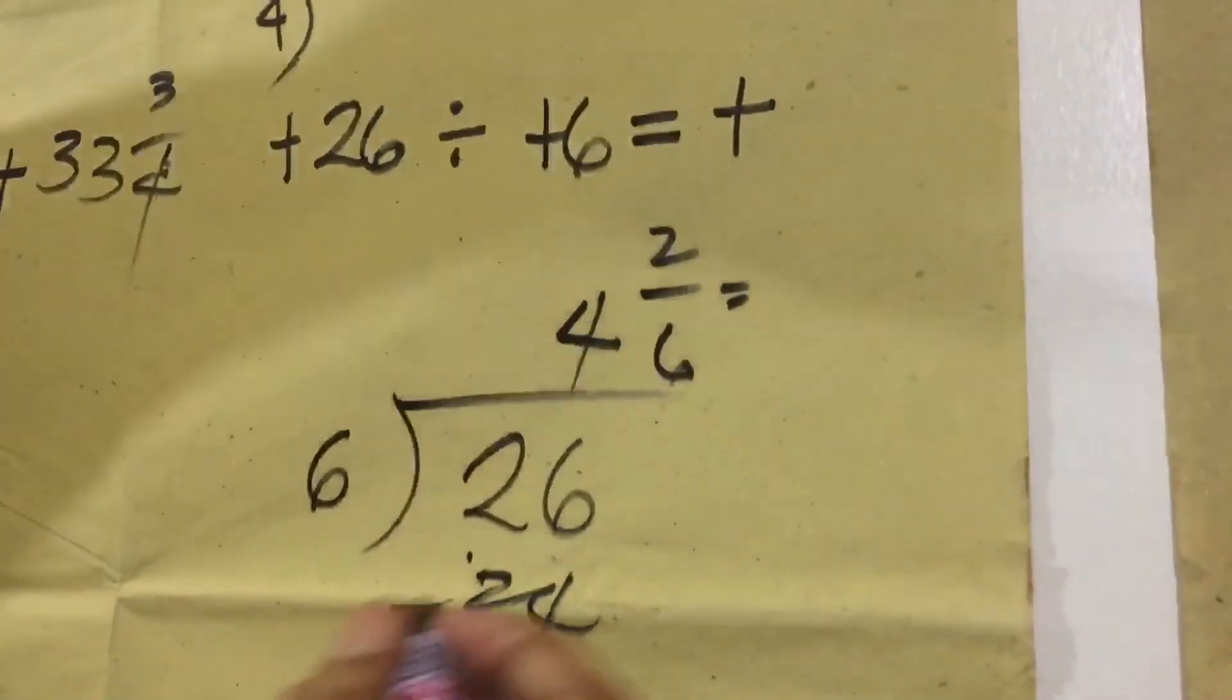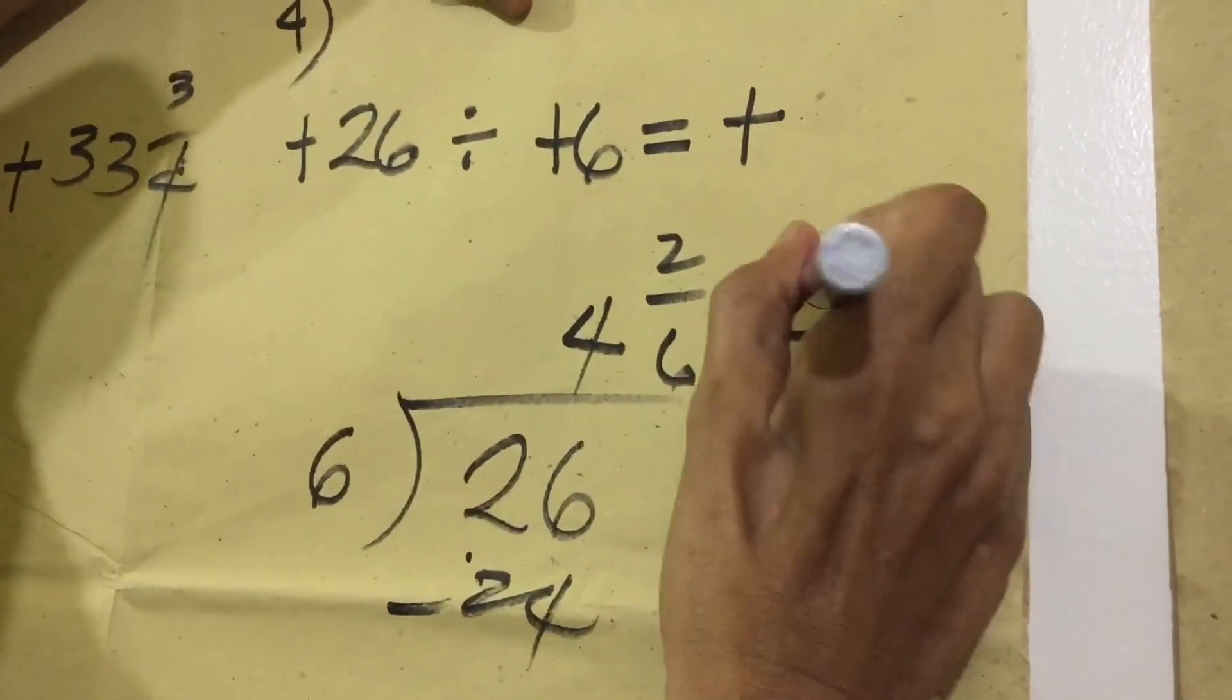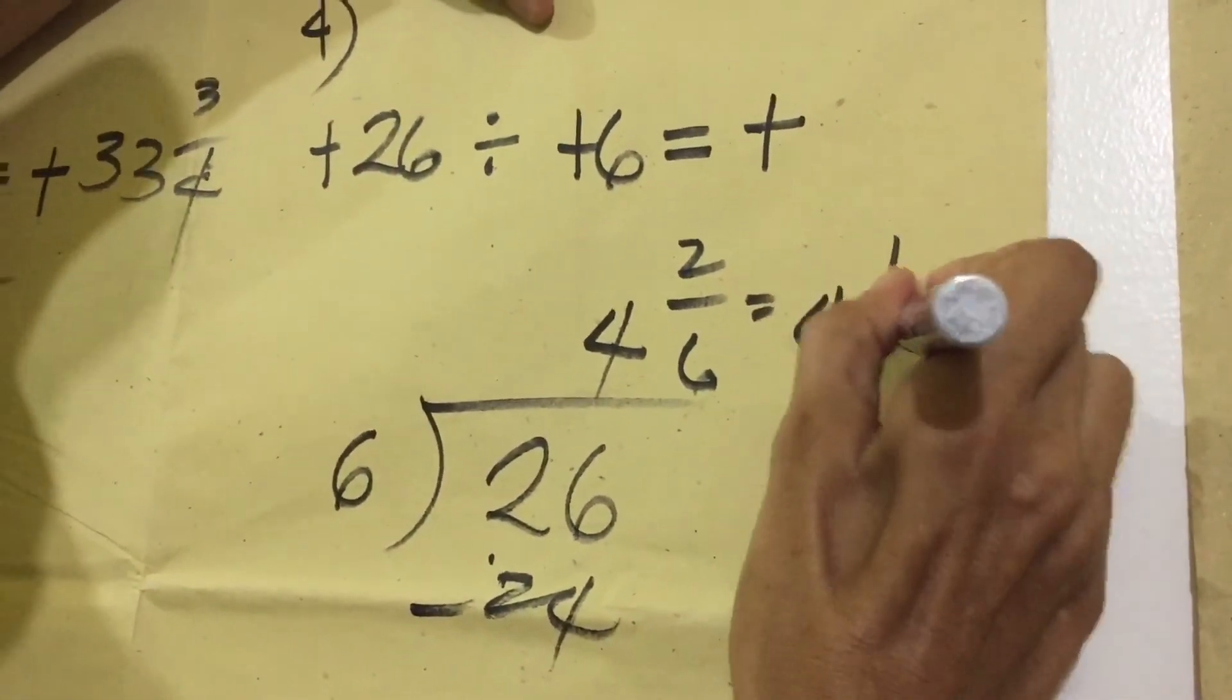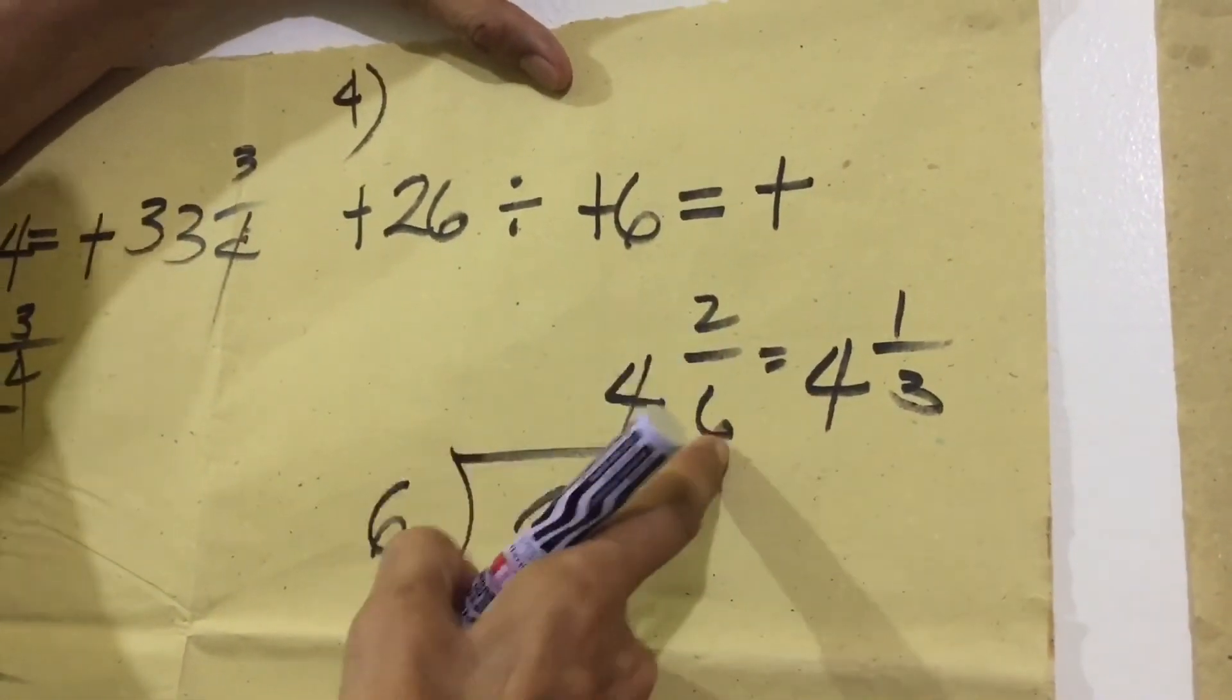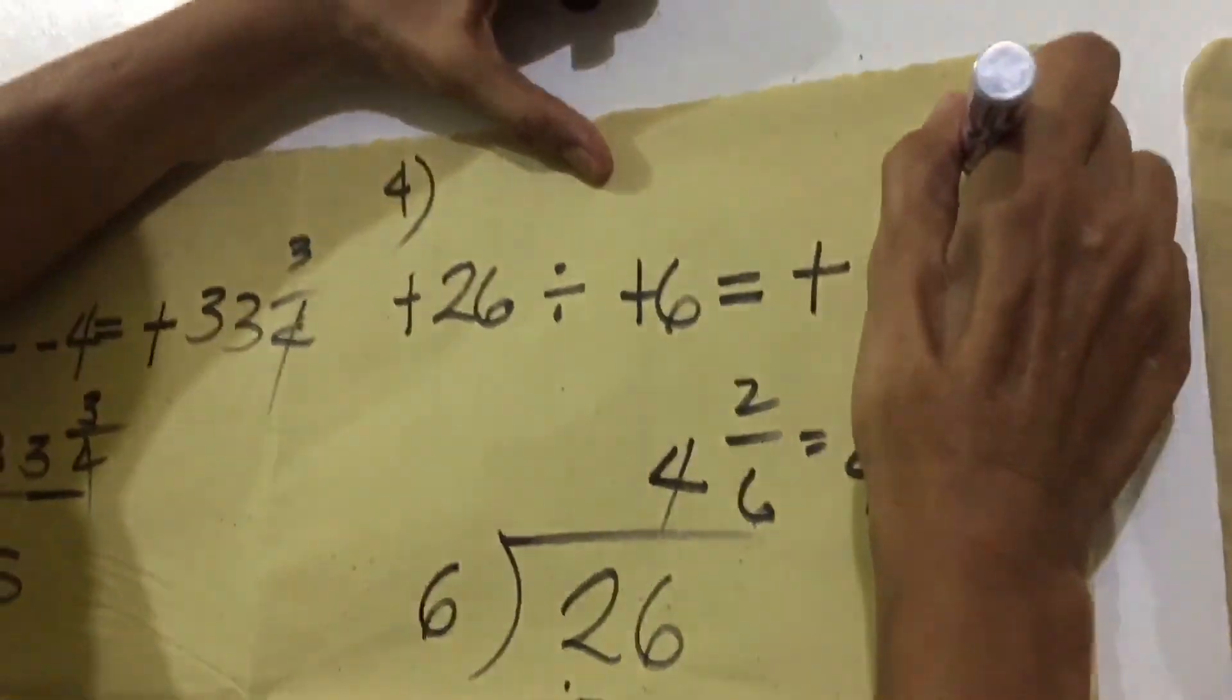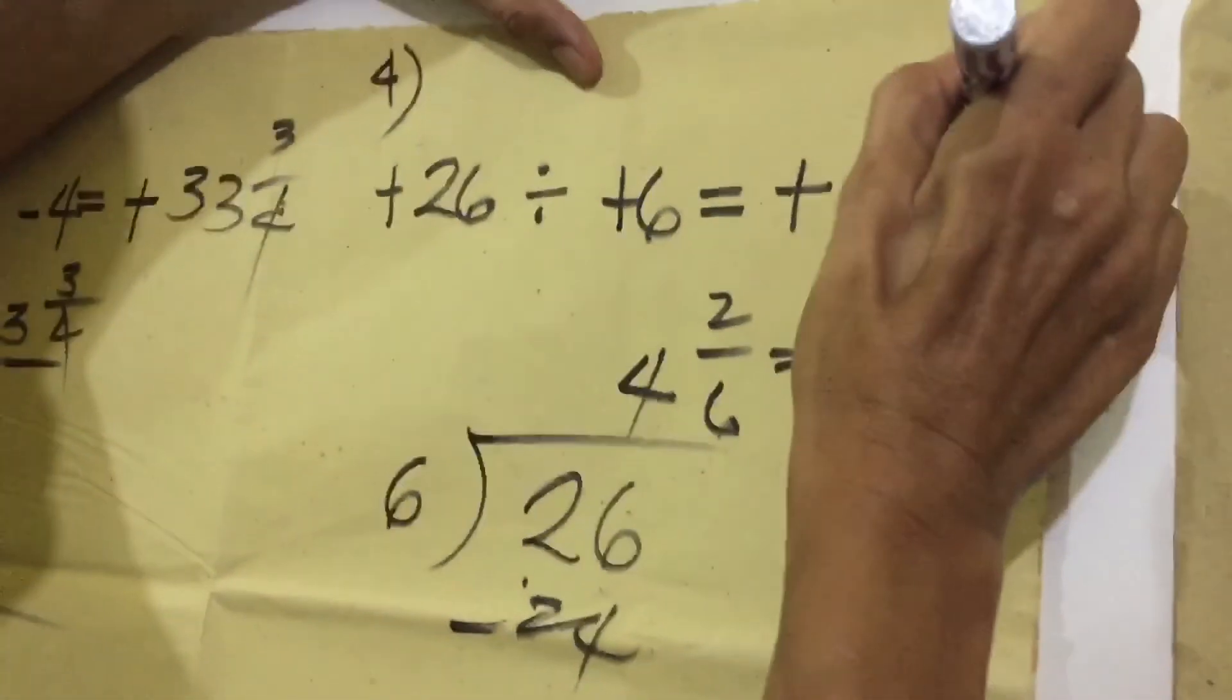So, our final answer here is 4 and 1 third. 2 ang makakadivide sa 2. 6 makakadivide sa 2. So, that's why 1 third. Final answer is 4 and 1 over 3.